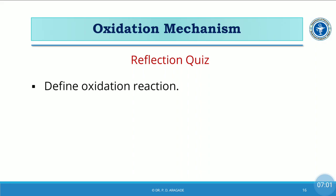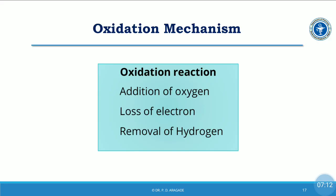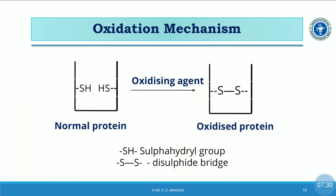The first mechanism is oxidation. Oxidation reaction is a chemical reaction in which there is addition of oxygen, loss of electrons, or removal of hydrogen — remember, removal of hydrogen is also called oxidation. In this reaction, if a normal protein contains sulfhydryl groups (–SH), applying oxidizing agents removes the hydrogen — that is the oxidation.